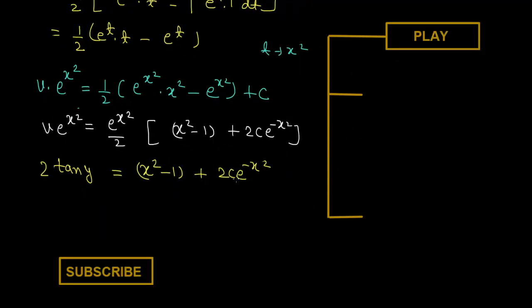This is the solution of the given Bernoulli equation. The method: first remove the y^n term from the right-hand side, then convert to a linear differential equation, and solve it using the integrating factor method. Thank you.